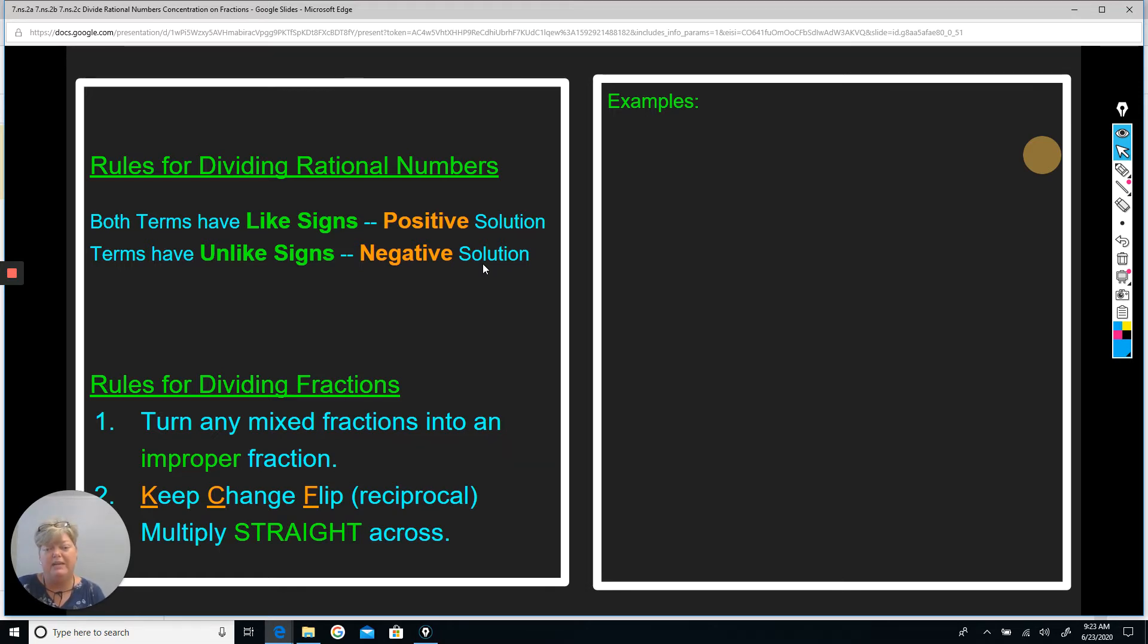You're going to follow the rule keep, change, flip, which means find the reciprocal of that fraction, which means we just flip it over. And you're going to multiply straight across just like you would in multiplication of fractions.